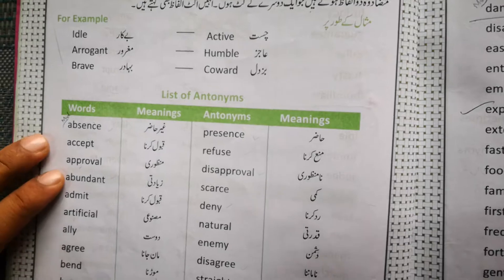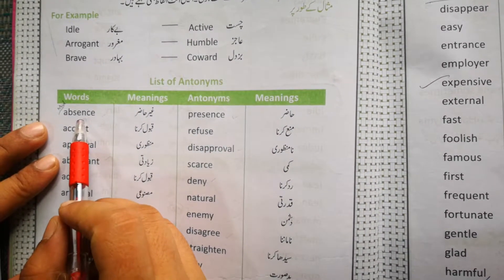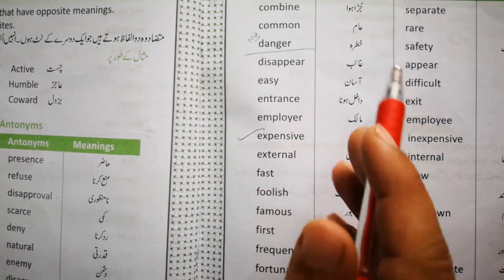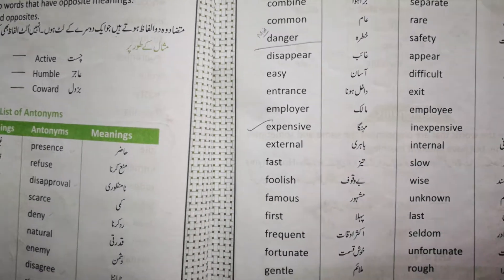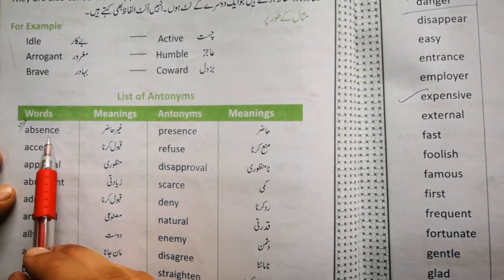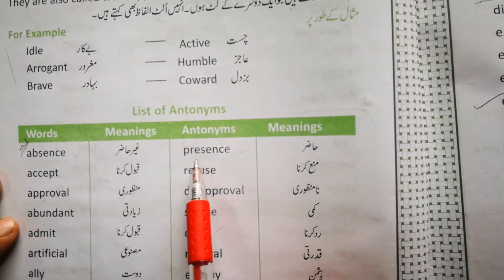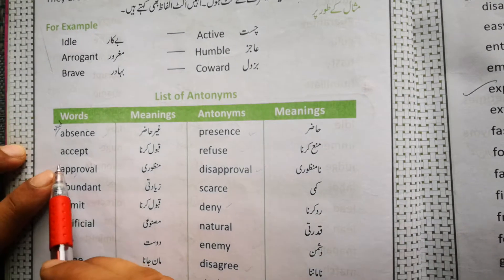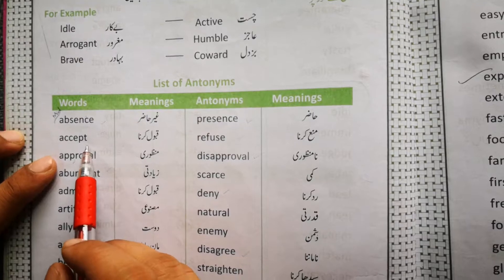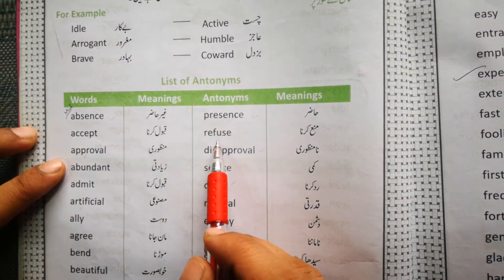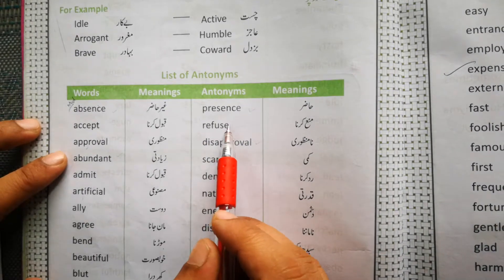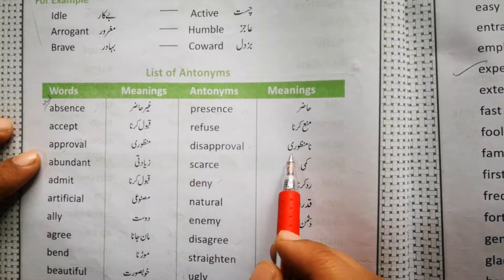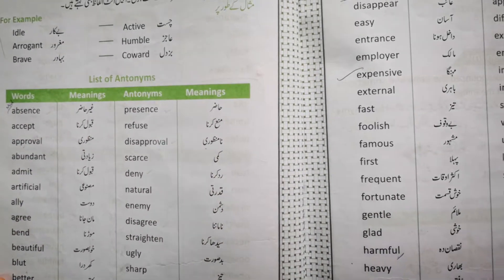In page number 8, absence, and in page number 9, danger — you have to remember these. For example, absence — its antonym is presence. Accept — if you refuse or reject, then the antonym is refused. In this way, approval — its antonym is disapproval, meaning not approval. All of these antonyms you will remember.